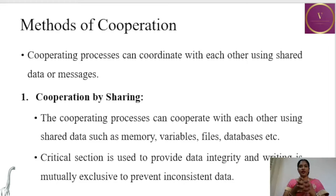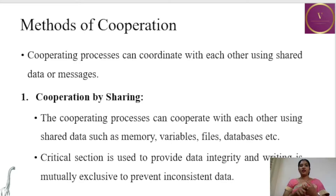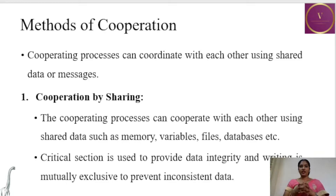The cooperating processes can cooperate with each other using shared data such as memory, variables, files, database, etc. The critical section is used to provide data integrity, and writing is mutually exclusive to prevent inconsistent data. That is, when one process is writing, the other process will be waiting, so that if both processes write to the same shared memory space at the same time, it will lead to inconsistency.